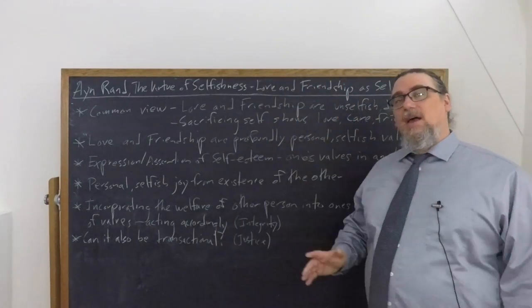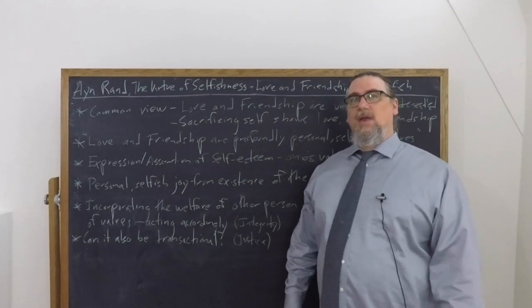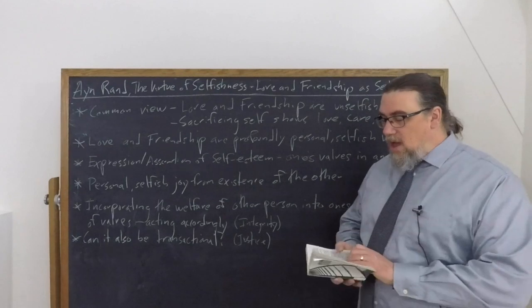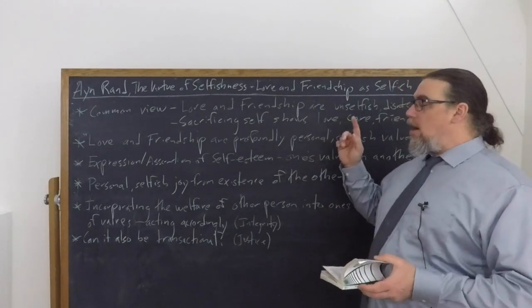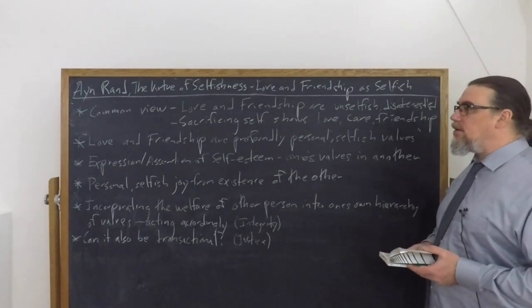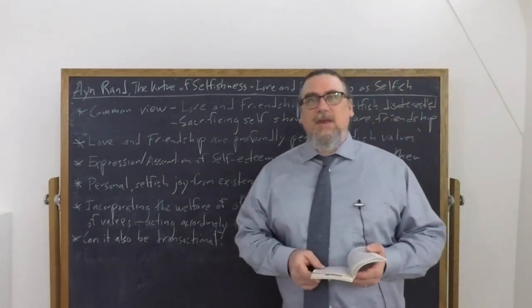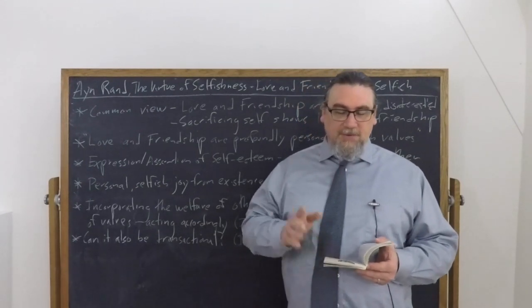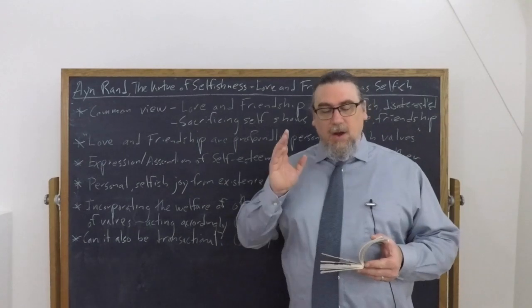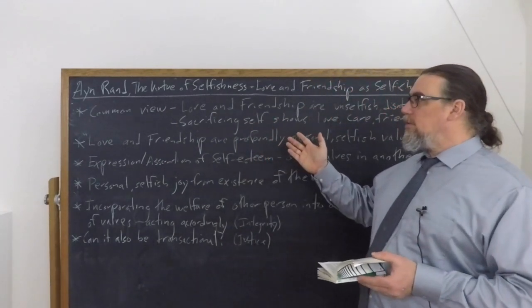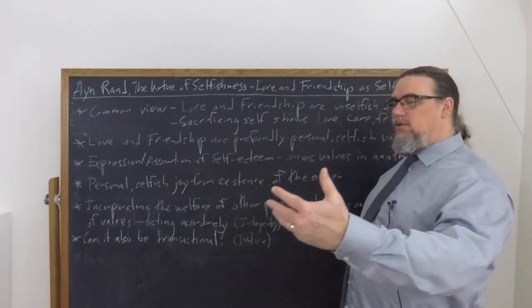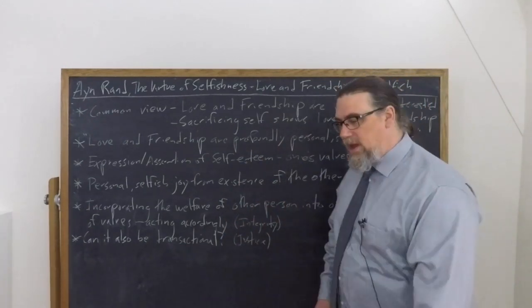Rand says no, that's a misguided way of looking at things. She says love and friendship are profoundly personal, selfish values. And she goes on and says love is an expression and assertion of self-esteem. We're going to get to that in a moment. These are personal values. We feel love, affection, friendship towards other persons as the person who we are.